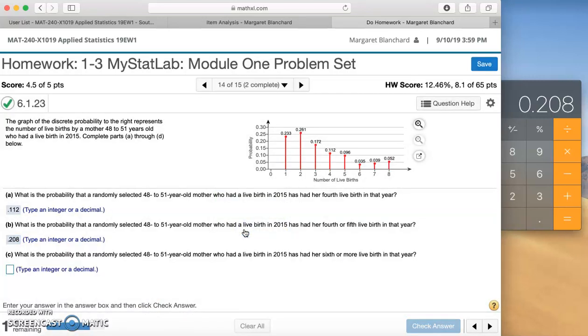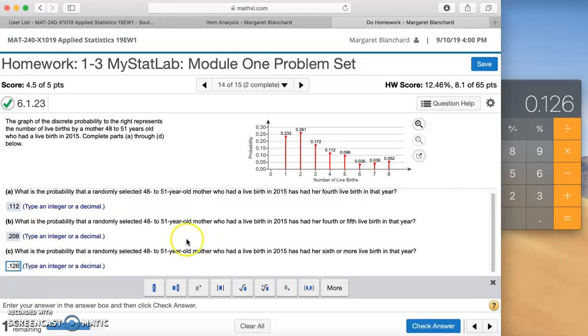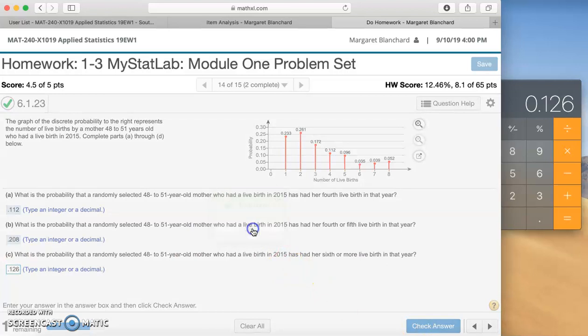Part C, what is the probability that a randomly selected 48 to 51 year old mother who had a live birth in 2015 has had her sixth or more live birth that year? Similarly to part B, now we're looking at six or more. That means we're looking at six, seven, and eight. We add those three probabilities together: 0.035 plus 0.039 plus 0.052. We have 0.126. Check the answer. Well done.